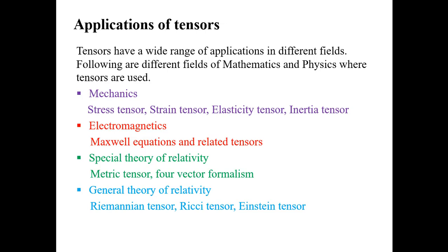After that, there is general theory of relativity proposed by Einstein as well. And we will discuss the Riemannian tensor, Ricci tensor, Einstein tensor, and some more tensors which are used in general theory of relativity. So these are the applications of tensors which in general we will discuss in this course.